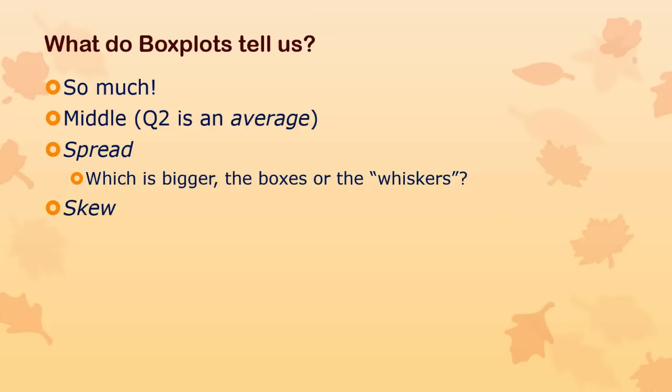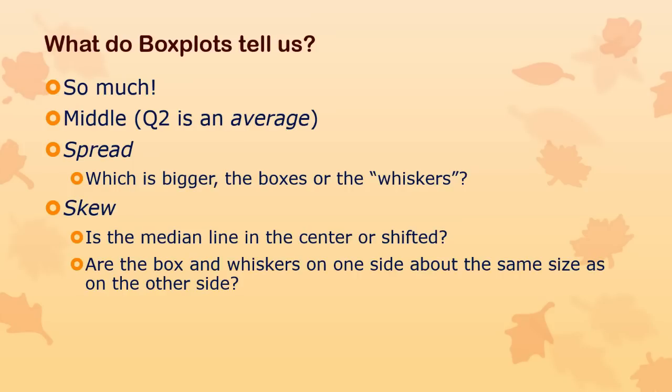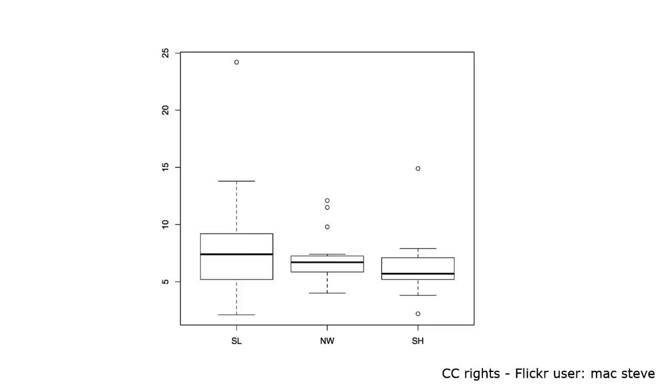You can tell skew, which is sort of whether the data are kind of lumped up to one side or the other. So is the median line in the center or shifted? And then is the box in one end of the whiskers with a long whisker or on the other end with a long whisker? Is there asymmetry going on there? And then it'll tell us whether there are potentially outliers. And then it's interesting to know whether there are asymmetrical outliers. Asymmetry is an important thing to pay attention to here.